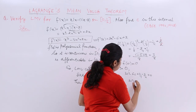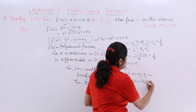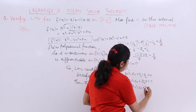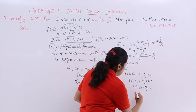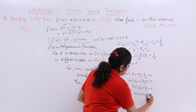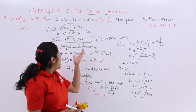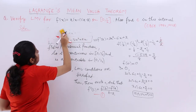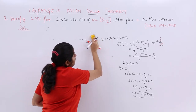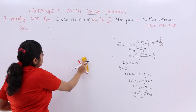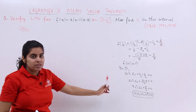Rearranging: 3C² - 6C + 2 - 3/4 = 0, which gives 3C² - 6C + 5/4 = 0. Taking LCM 4 and multiplying through: 12C² - 24C + 5 = 0. This is a quadratic equation which can be solved using the quadratic formula.